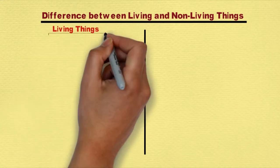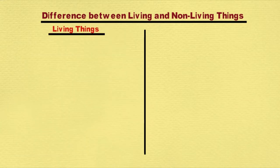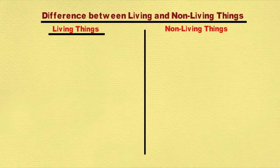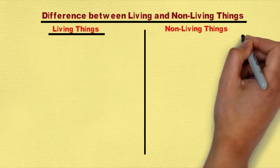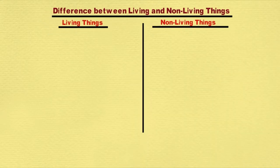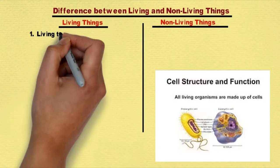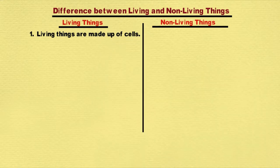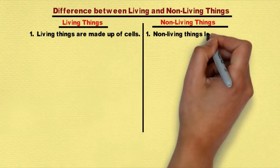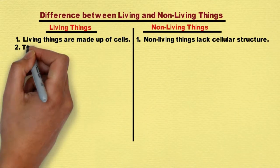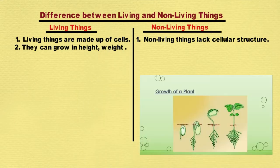Living things can grow in height, weight, size, or volume. Non-living things can't grow in height or weight.